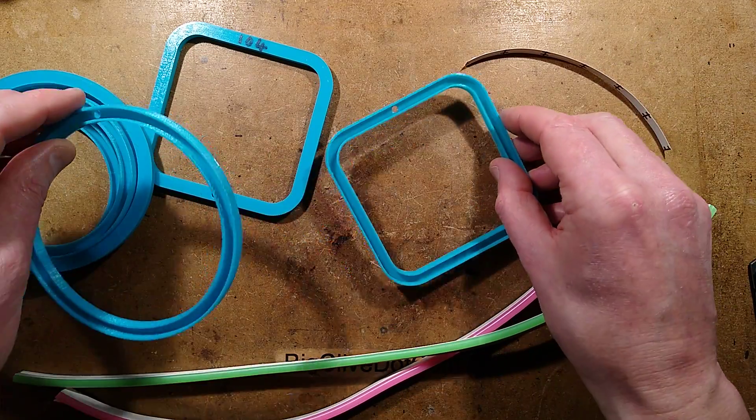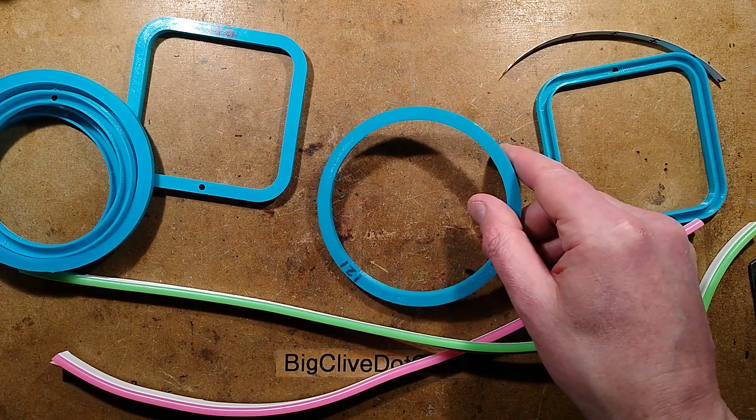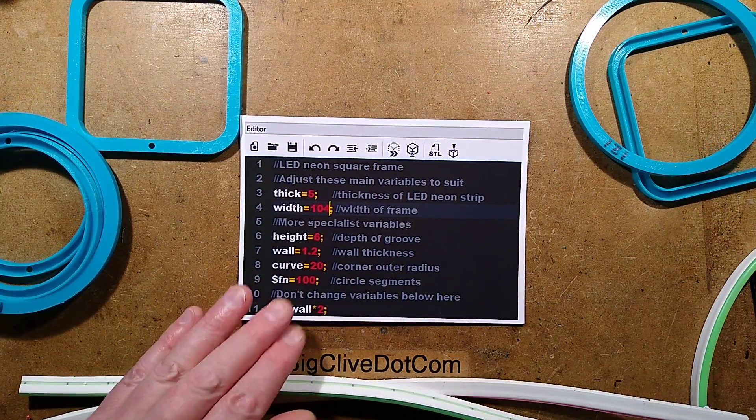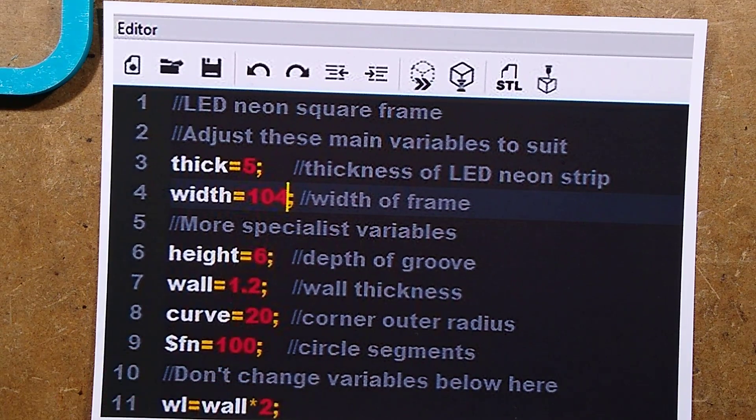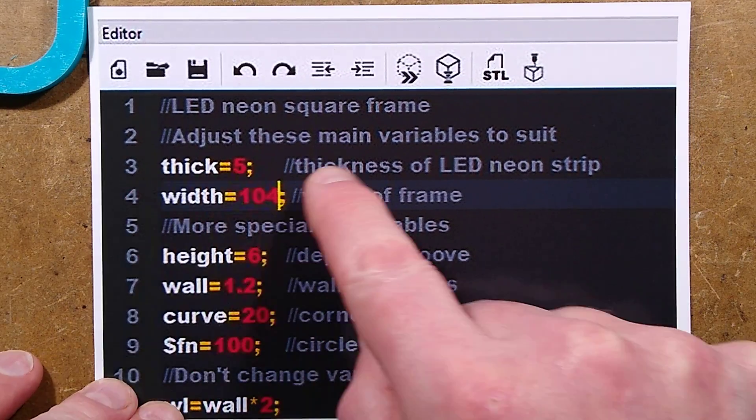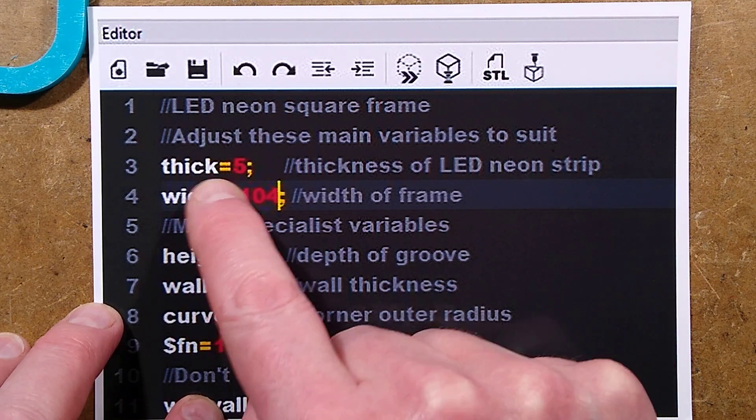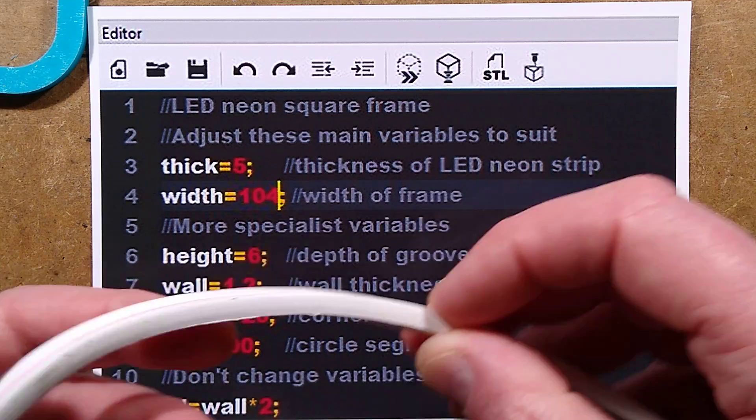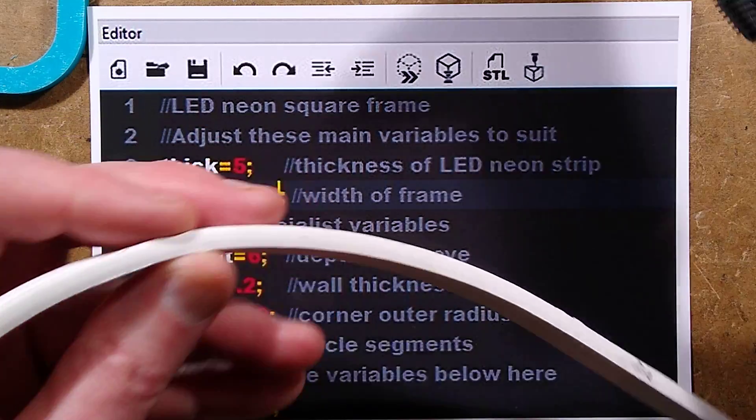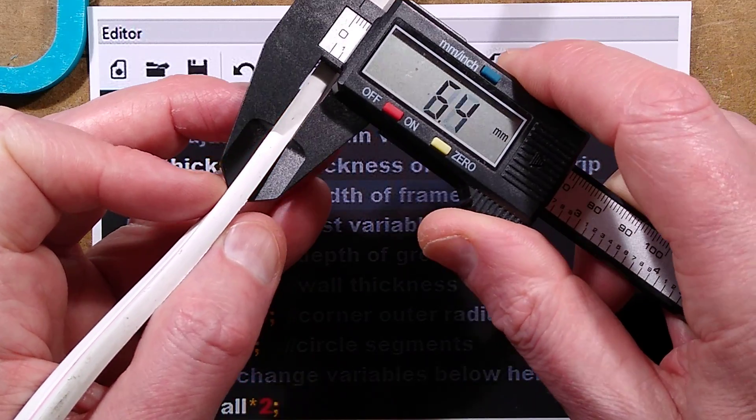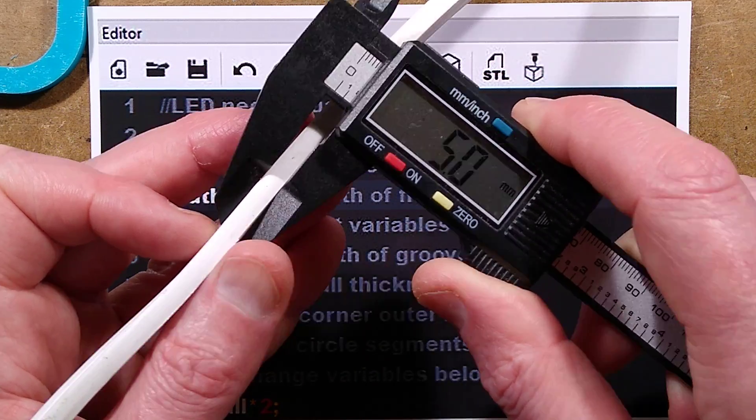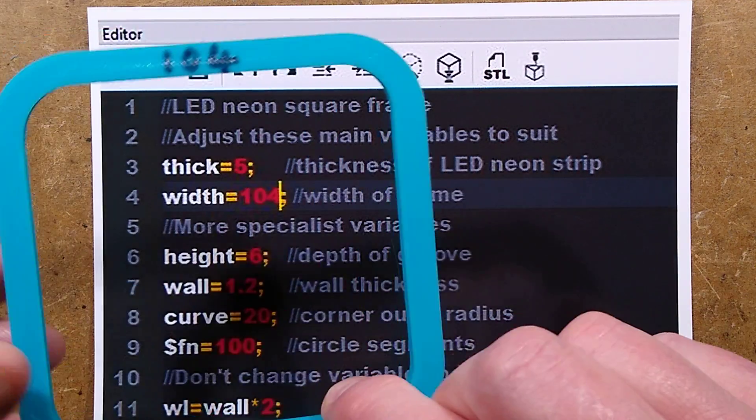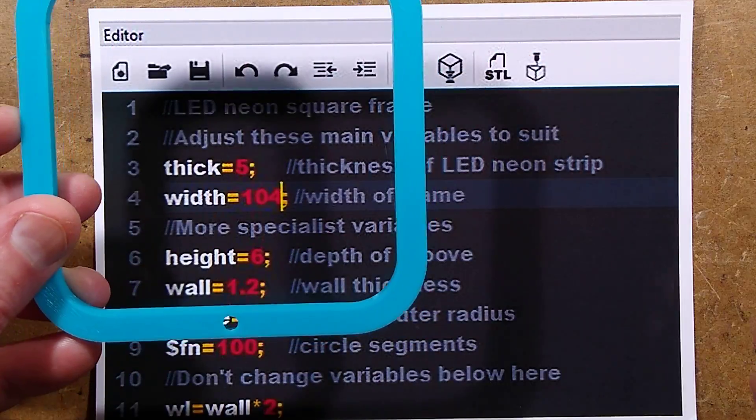So here is how you do the project. The script that you use to print these, and there are three of them down below, has just a couple of variables. The main things you want to change in the script are thick, which is the thickness of the LED neon, that's the back bit that's actually going to go into the channel. Let me just grab a pair of calipers here and show you that the thickness of this stuff is typically about 5mm for this particular version. That's why that's set to 5mm.